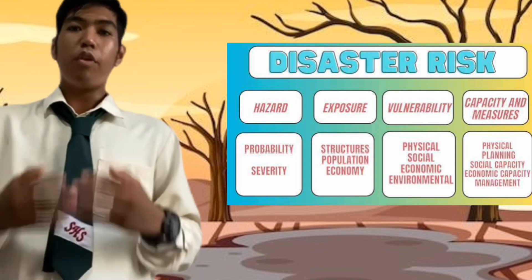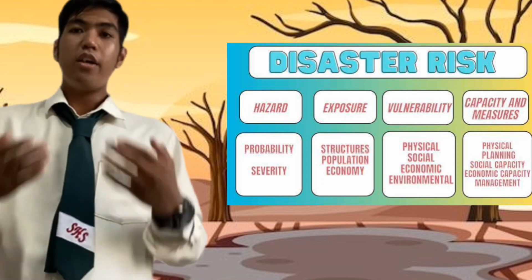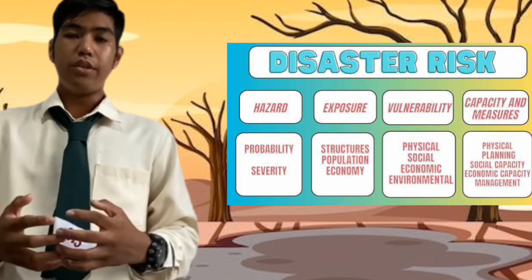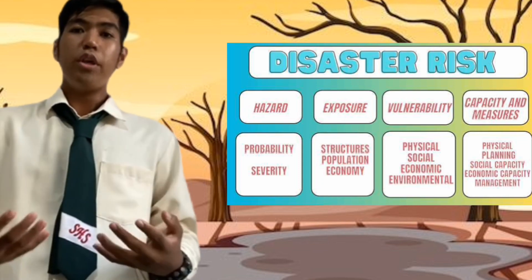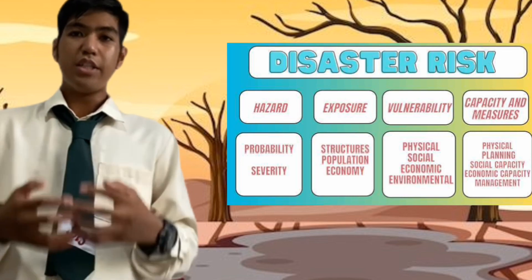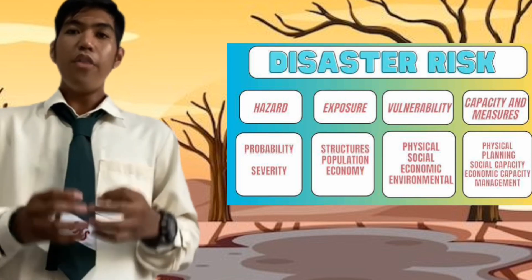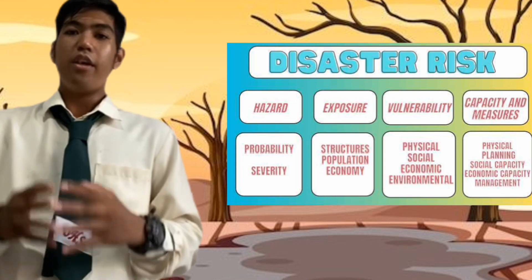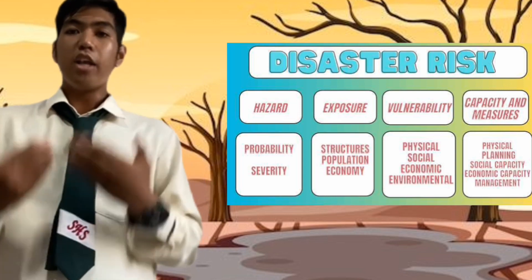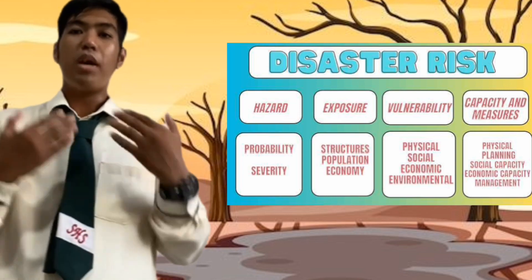The last element is capacity and measures — the combination of all the strengths, attributes, and resources available within an organization, community, or society to manage and reduce disaster risk and strengthen resilience. Under this are physical planning, social capacity, economic capacity, and management.